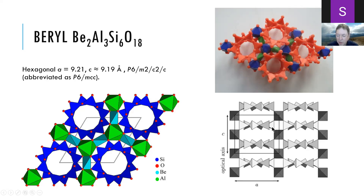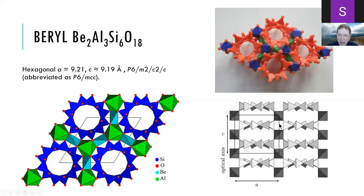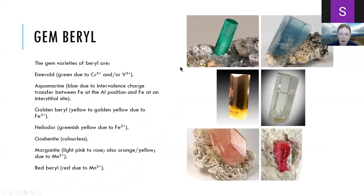In this diagram we don't see the beryllium tetrahedra. Most substitutions in the beryl structure happen at the aluminum site in these octahedra, but we can also have lithium replacing beryllium in the distorted tetrahedral sites. There are also substitutions in the channels and an interstitial site between the aluminum octahedra that is usually empty.